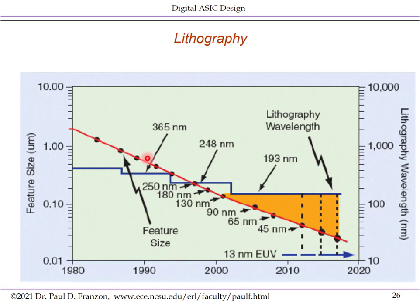This process is called lithography. Over the first few decades of the semiconductor industry, the wavelength used for lithography was repeatedly shortened from 365 nanometers down to 193 nanometers. 193 nanometer light is about the shortest wavelength practically achievable, so for a long time fabs used 193 nm light to define chips with progressively smaller features.